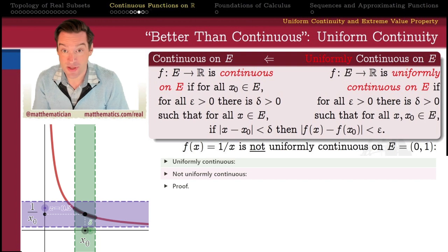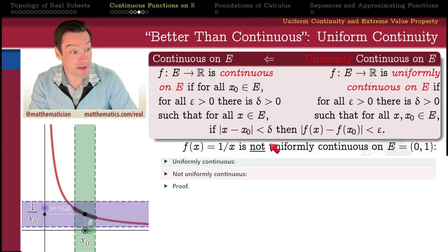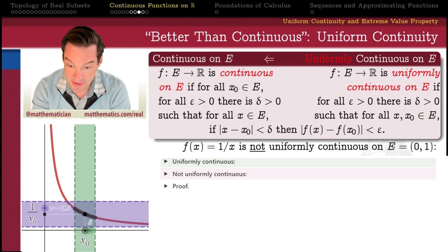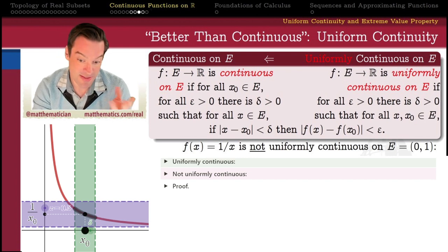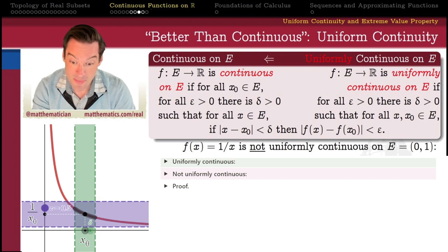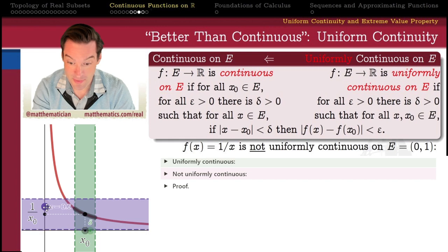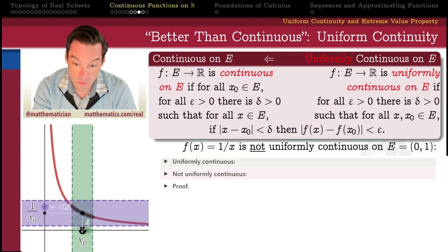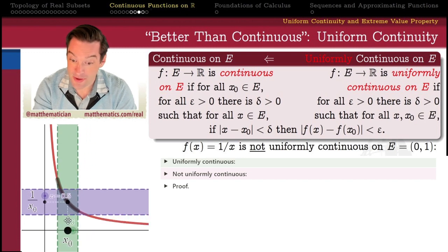Let's use this definition directly to show that the reciprocal function f(x) = 1/x is not uniformly continuous on the open interval from 0 to 1. I'd used this visual to give a plausible argument for why this function is not uniformly continuous. Because if we pick an epsilon — say epsilon equals 1/2 — then there is some place on the open interval from 0 to 1 where, whatever delta I pick, there are x values that are that close.